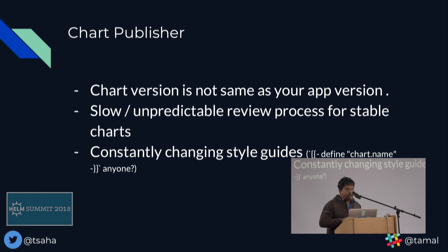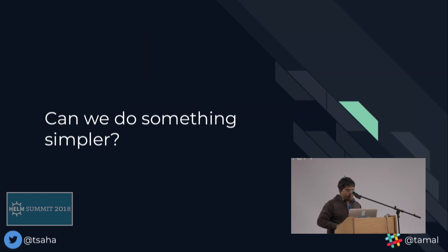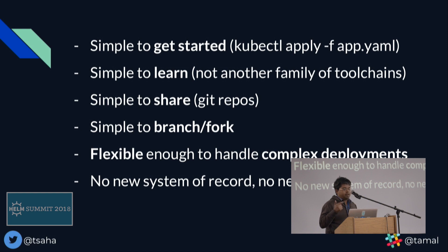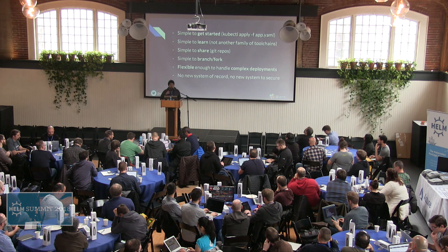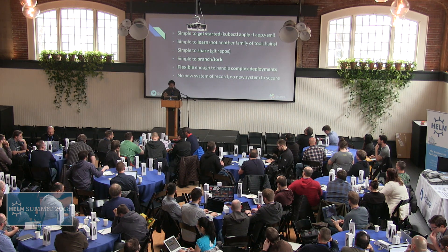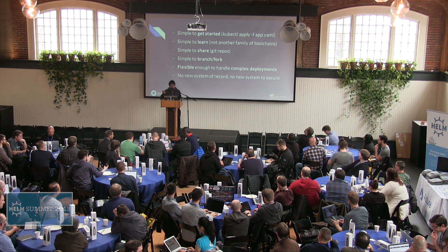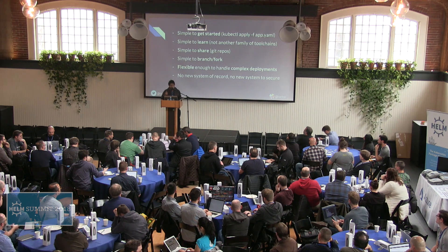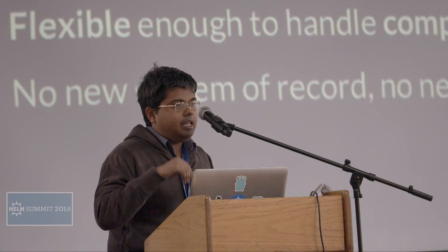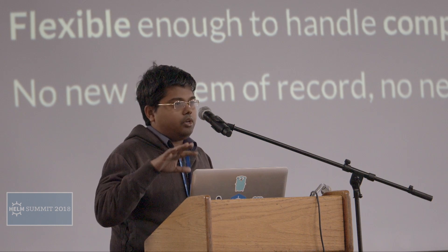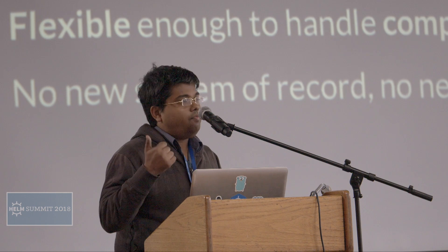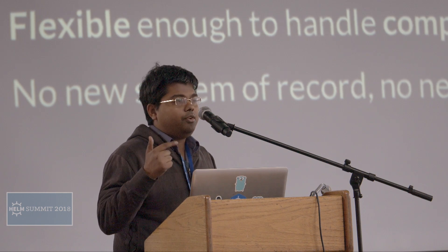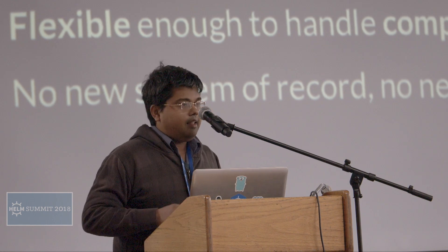The stable chart repo style guide is getting better, but that also means it constantly gets changed. How many times has the indentation length changed? So I started thinking about doing something simple — simple to get started. I just want to do kubectl apply, because at the end of the day Tiller is just a glorified kubectl apply with a history of what was applied stored in config maps. Simple to learn — I don't want to learn a whole new family of tool chains. I want to share my charts, because eventually everybody forks their charts since everybody needs something different, even inside your organization. You probably want to branch and fork because you have different clusters and different environments. It needs to be flexible enough to handle complex deployments, and I don't want another source of truth or another system to secure.